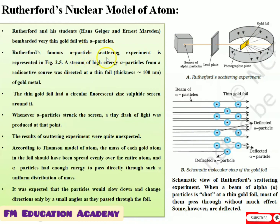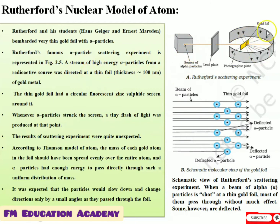Rutherford's famous alpha particle scattering experiment is shown in this figure. A stream of high energy alpha particles from a radioactive source were directed to a thin gold foil of 100 nanometers. This thin gold foil has a circular fluorescent zinc sulfide screen surrounding it.